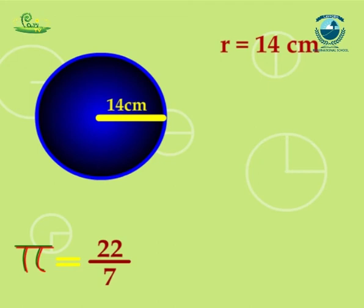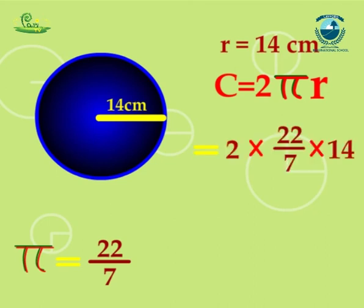So c will be c equals 2πr, that is equal to 2 multiplied by 22/7 multiplied by 14, that is equal to 88 cm.